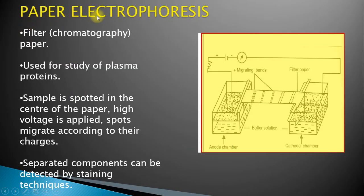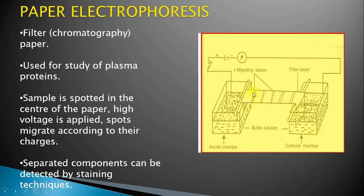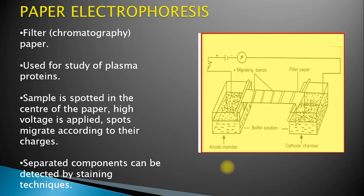The first type of zone electrophoresis is paper electrophoresis, where chromatographic grade filter paper is used. It is carried out for the study and separation of plasma proteins. There are two chambers — an anode chamber and a cathode chamber — connected to a DC power supply. The paper is dipped into both chambers; the sample migrates and spots separate according to their charges. Separated components are detected by staining techniques. Cellulose acetate electrophoresis is an improvement, being more homogeneous with uniform pore size and not absorbing proteins like paper does.